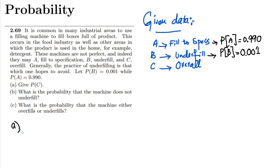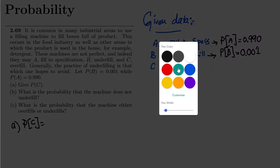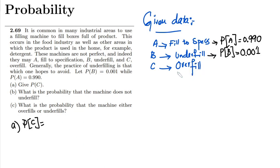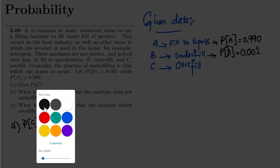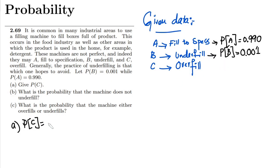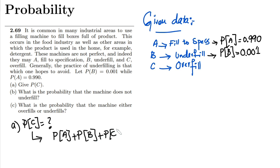Now according to this question, for part a we have to find out the probability of the overfill, P(c). In this scenario we have three conditions such that probability of a plus probability of b plus probability of c is equal to 1.